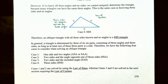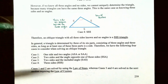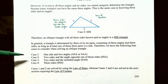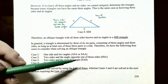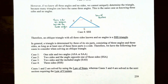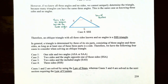In general, a triangle is determined by three of its six parts — three angles and three sides — as long as one of the three parts is a side. The four cases are: case one, one side and two angles (ASA or SAA), use law of sines; case two, two sides and the angle opposite one of them (SSA), use law of sines; case three, two sides and an included angle (SAS), use law of cosines; case four, three sides (SSS), use law of cosines.